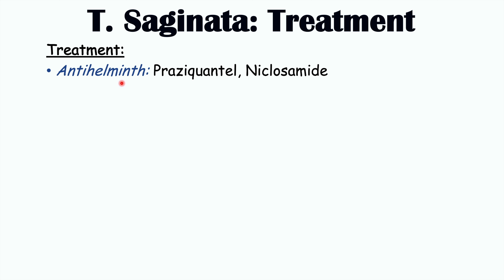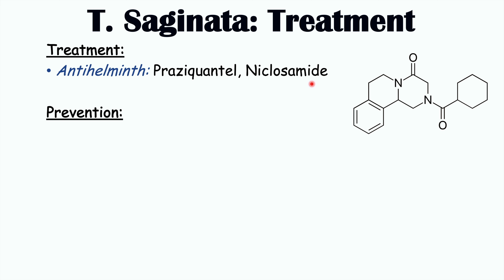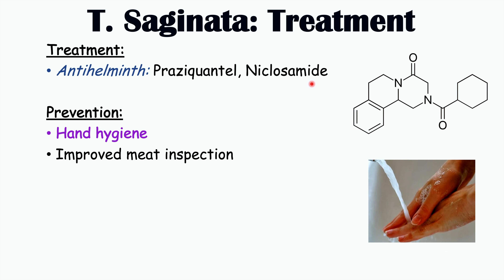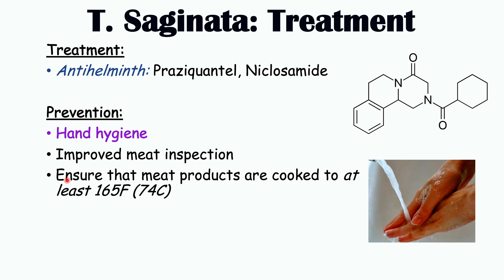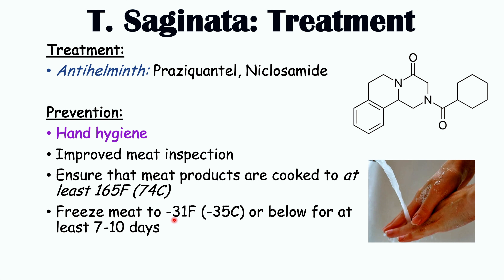Once diagnosed, clinicians use anti-helminth therapies — medications like praziquantel and niclosamide are important for treatment. Prevention includes good hand hygiene when touching raw beef products, improved meat inspection, and ensuring meat is cooked to at least 165 degrees Fahrenheit or 74 degrees Celsius to kill cysticercae. Freezing meat to minus 31 degrees Fahrenheit or minus 35 degrees Celsius for at least 7 to 10 days may also neutralize the cysticercae.